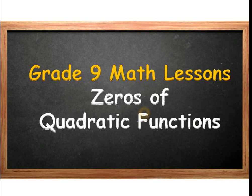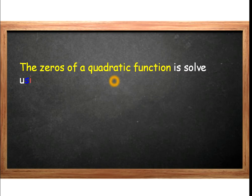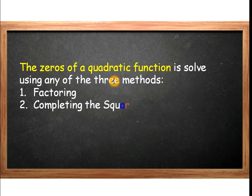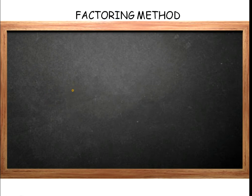In this video, you're going to learn how to solve for the zeros of quadratic functions. The zeros of a quadratic function can be solved using any of three methods: the first is factoring, the second is completing the square, and the third is using the quadratic formula. This video will focus on the factoring method.